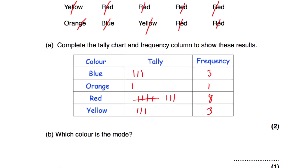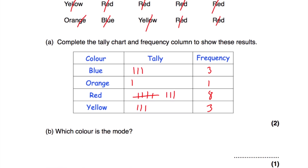The next part says, which colour is the mode? Remember the mode is the one with the highest frequency — the one that occurs the most. As you can see here, red has got a frequency of eight, which is much higher than all the other frequencies. So the answer is red, because it's the one with the highest frequency.